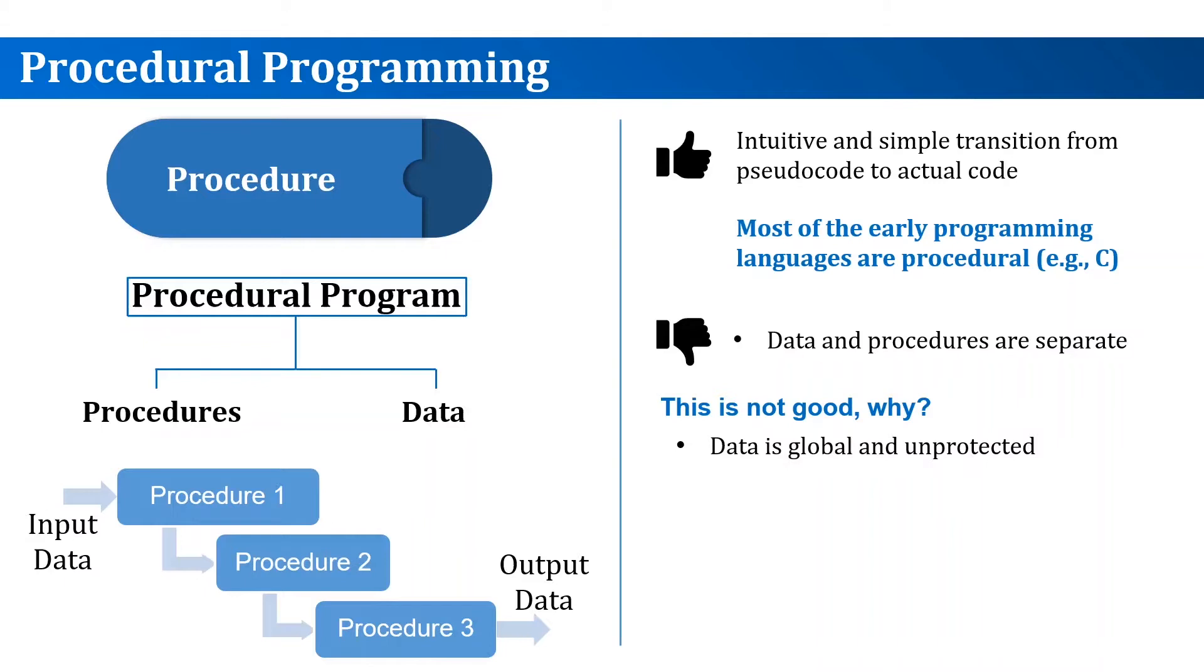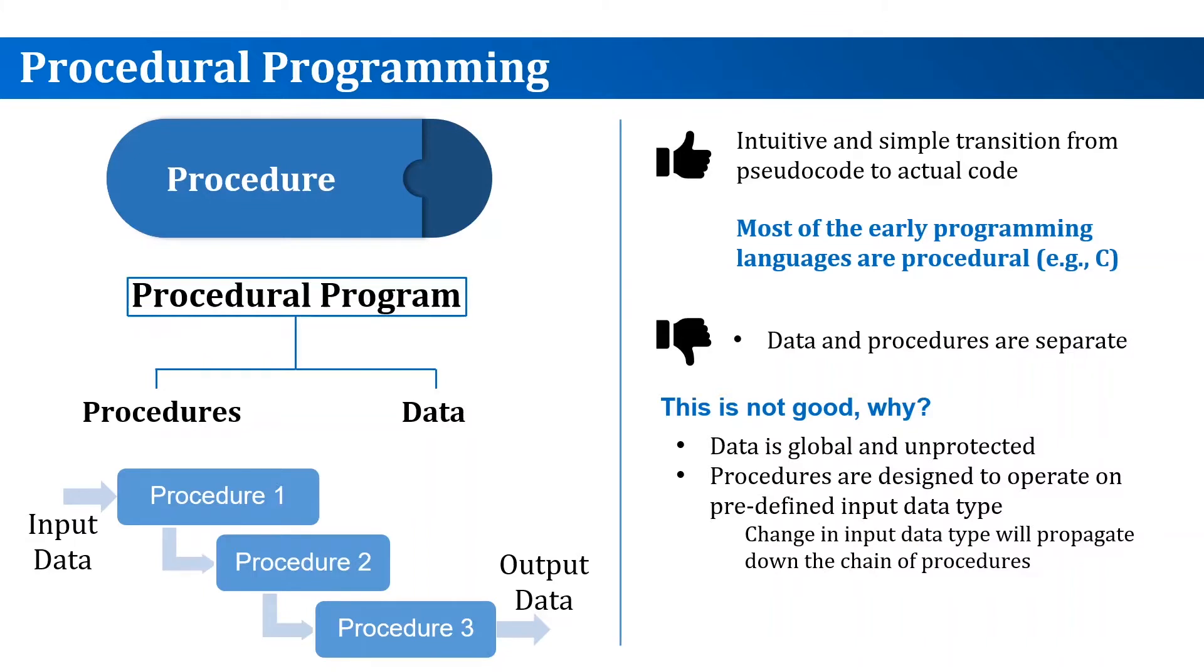Another problem is the matching between the data types and the procedure design. When you write a procedure, you assume a set of inputs with certain types and properties. If you change the data type or properties at any point, you will have to go and change every single procedure that operates on this data to account for the recent changes you made. This can be very difficult, especially for large programs with hundreds of procedures.